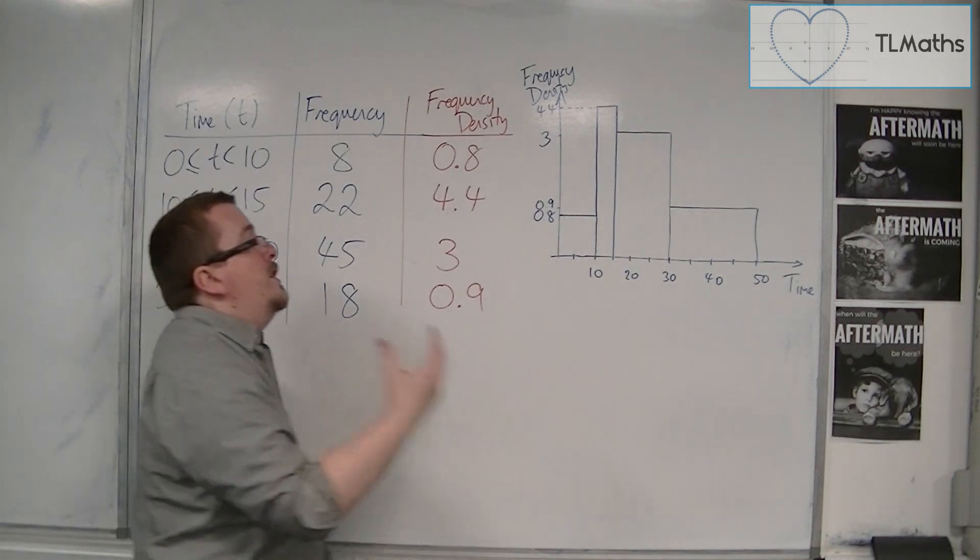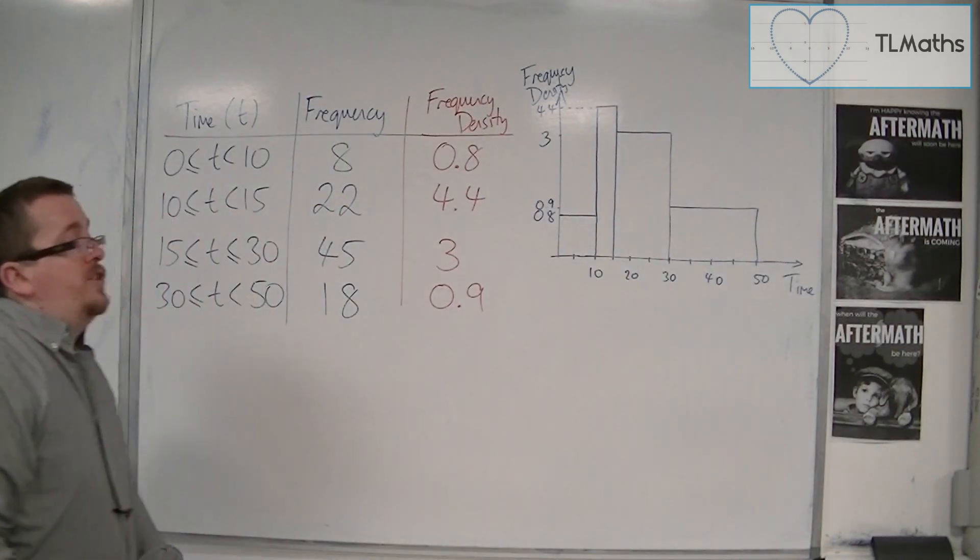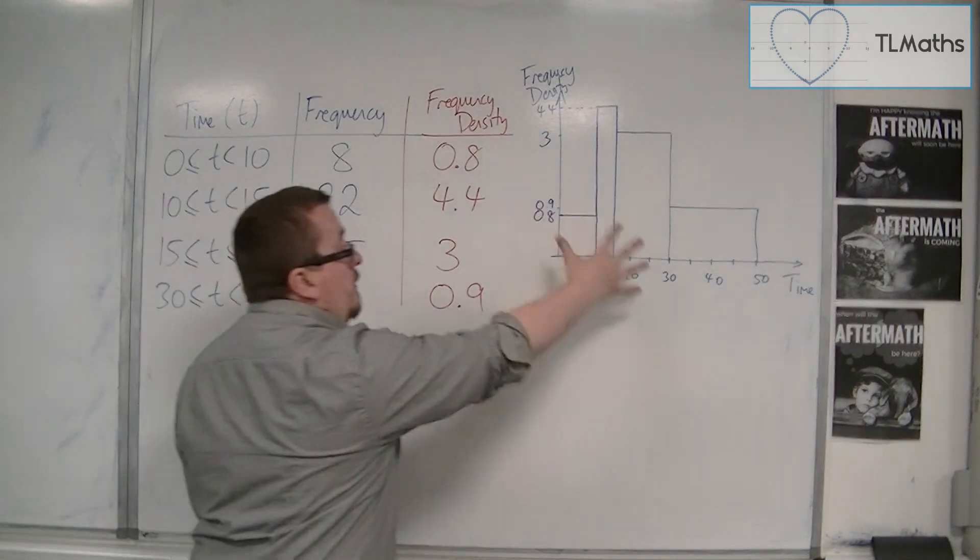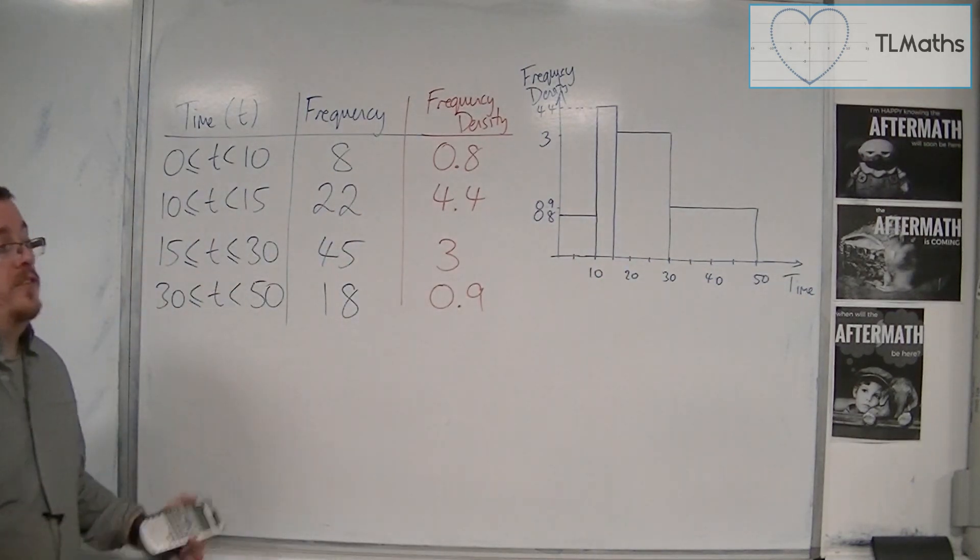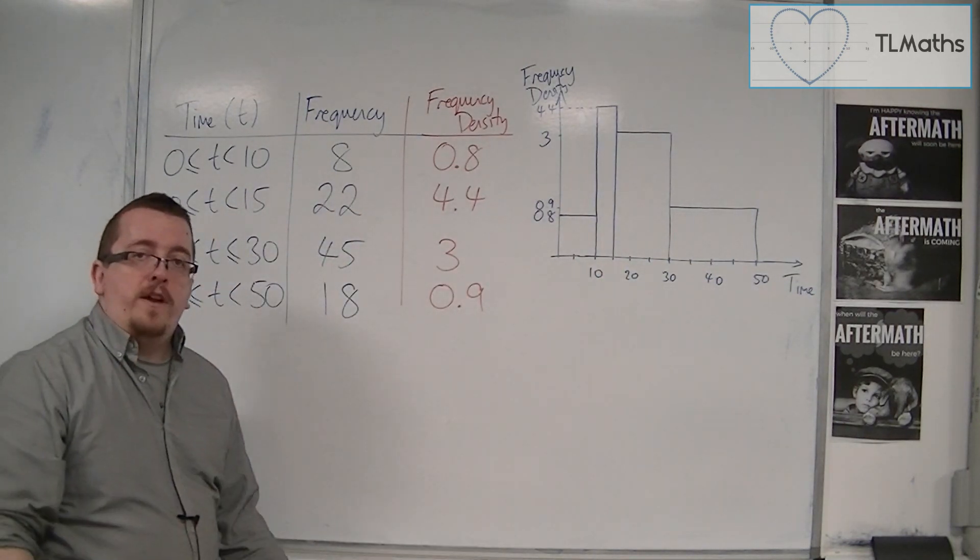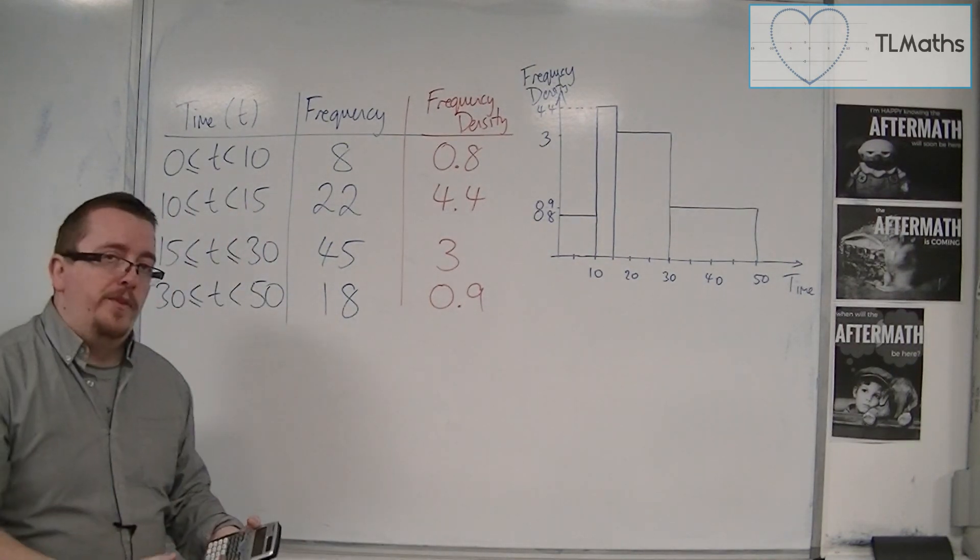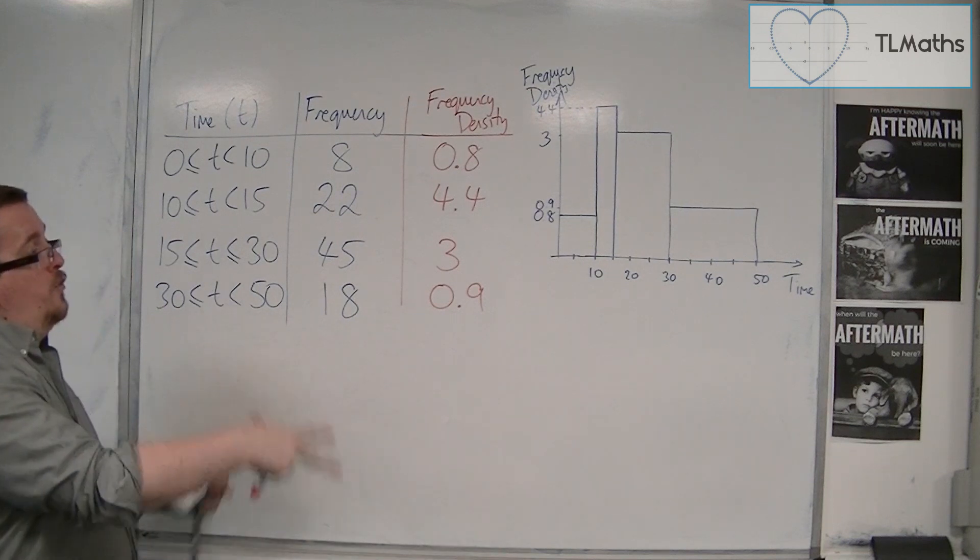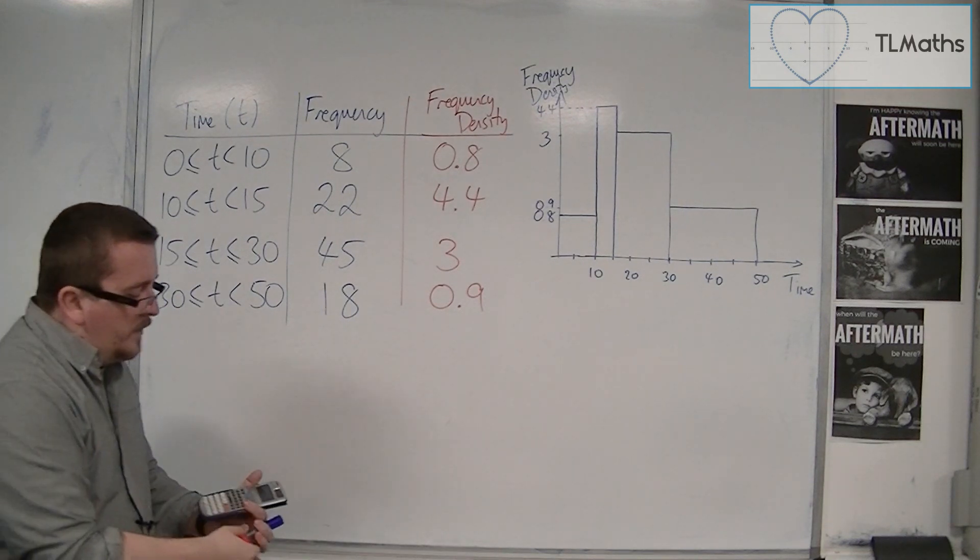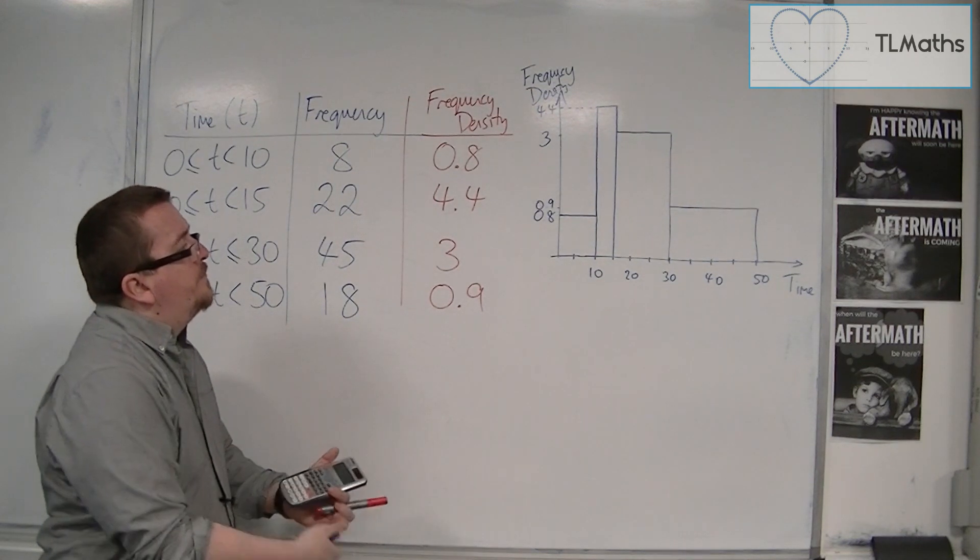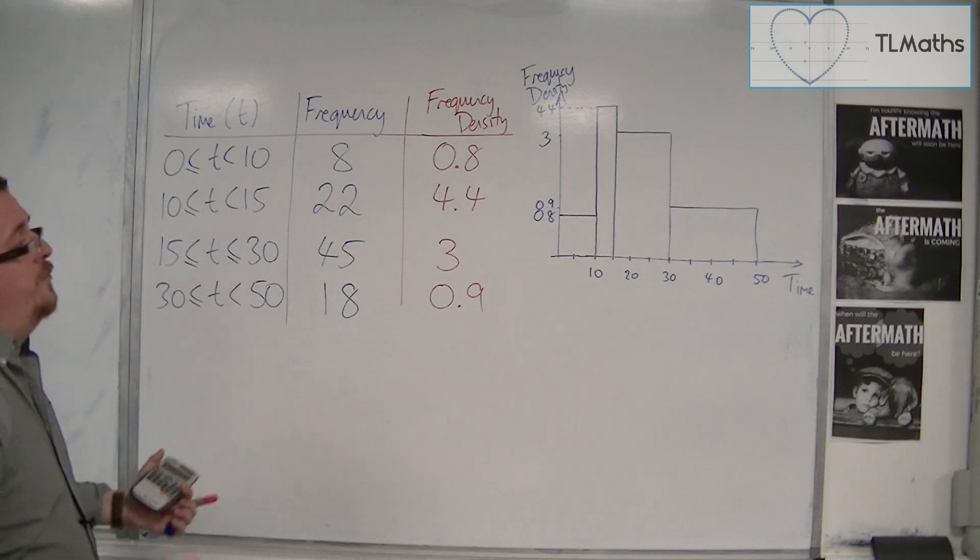So a frequency diagram, or a histogram rather, can look like this. So you've got these bars of different widths. And it's the area that represents the frequency, or how many are in each bar.